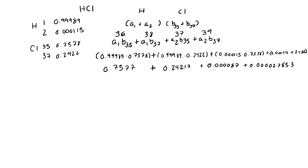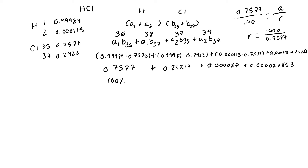In a mass spectrum, abundances are reported as relative abundances with the most abundant peak set to 100%. So we set our most abundant peak to 100% and calculate relative abundances for all other peaks. The easiest way is to set up a proportion: your absolute fraction over your relative fraction equals 0.7577 over 100. So all relative abundances equal 100 times the absolute abundance divided by 0.7577. Remember, this divisor will be different every time and is not always 0.7577.